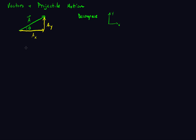For AX: cosine of theta is equal to AX over A, where A is the magnitude of the vector. Likewise, AY is related through sine, so sine theta equals AY over A. Now we just solve each of these for the components — these are called vector components.